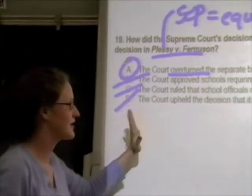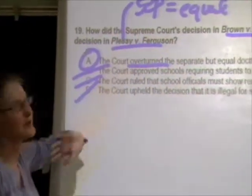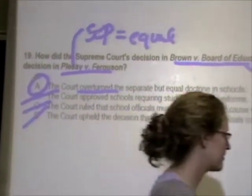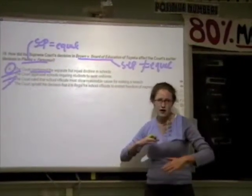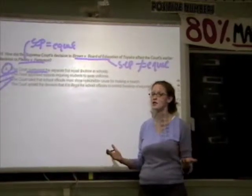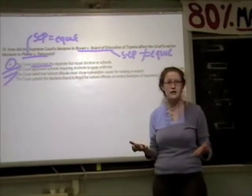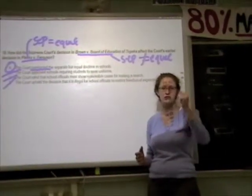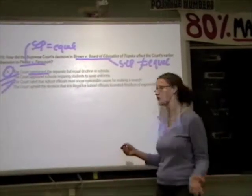D was crossed out because that's talking about Tinker v. Des Moines — another court case, but not the ones mentioned up here. So A is the correct answer. I'm reading everything to make sure I'm not getting confused or that there isn't a better answer. Because sometimes the HSA will say 'which is the best answer?' So it's always a good habit to just read everything, and then you feel super confident in your answer.